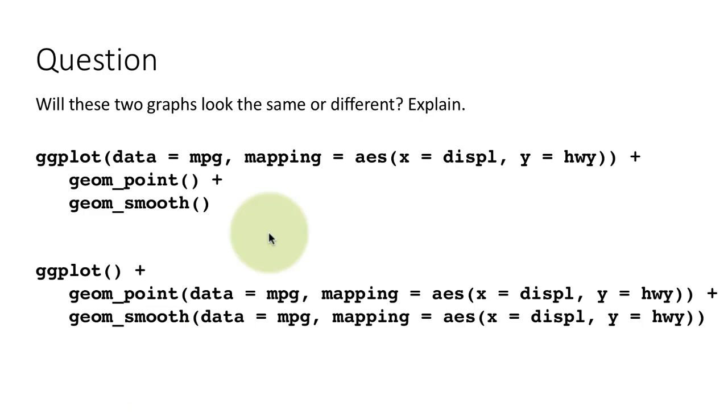Why is that the case? Well, here the data is MPG. Here also the data is MPG for both the layers. So the two layers are going to work with exactly the same data. Now let's look at the mappings. The mapping here is x equals displacement, y equals highway. And since that is done at the ggplot level, it applies to point and smooth. So both of these layers are going to have displacement on the x-axis, highway miles on the y-axis.